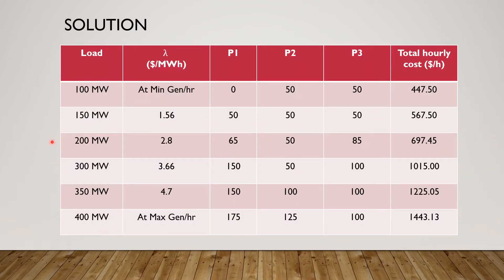This table shows the solution of the problem. Column 1 shows load varying from 100 MW to 400 MW. Column 2 shows lambda variation from minimum to maximum level. Columns 3, 4, and 5 show power generated by units 1, 2, and 3. Column 6 indicates the hourly cost of the power station for different load levels.